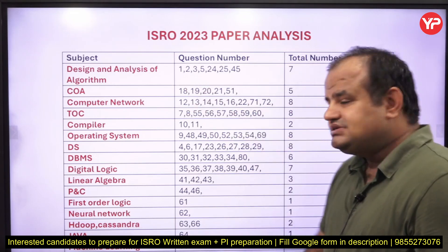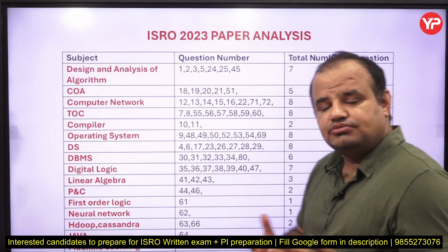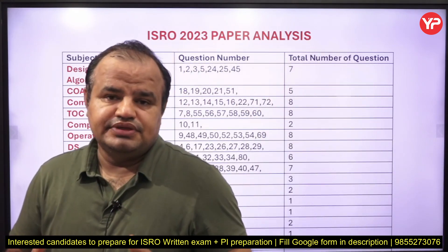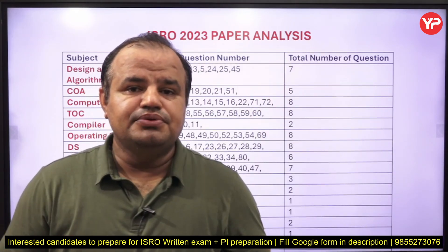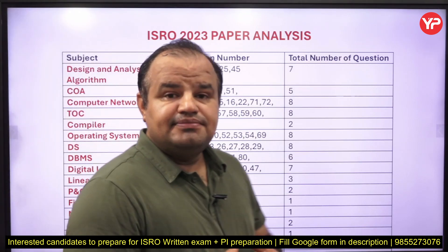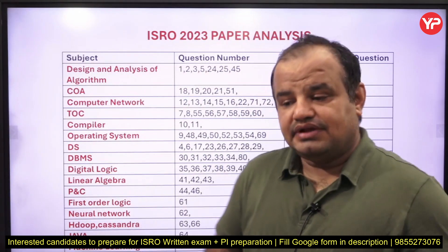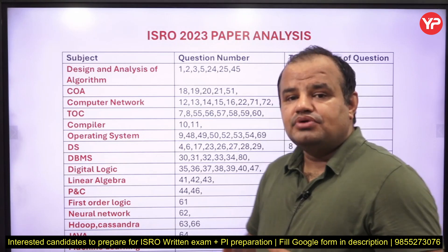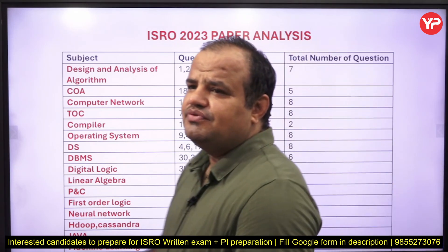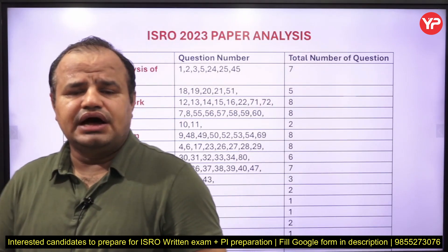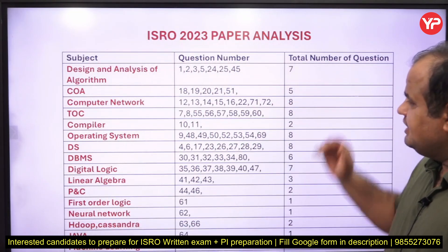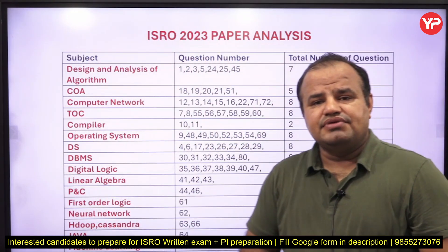This time in the last year they asked only five questions from COA, but most of the time they ask eight or nine questions from computer organization and architecture. One important part is pipelining, another is memory, and a theoretical type of question from the control unit is also asked many times. Then we have computer networks — eight questions from computer networks.